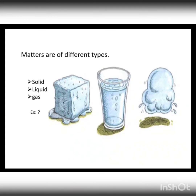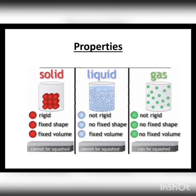Next, let's discuss the properties of solid, liquid, and gas. In solids, the molecules — the smallest constituent particles of the compound — are very closely packed and arranged in a regular manner. You can see this in the first figure, where solid molecules are close together and clearly arranged.